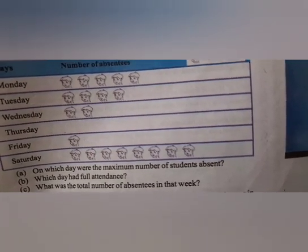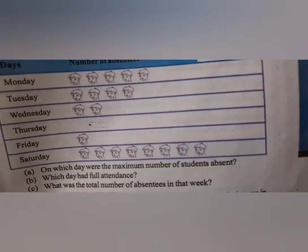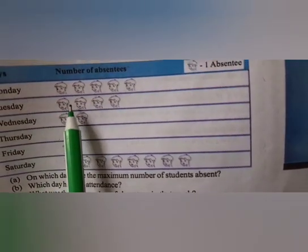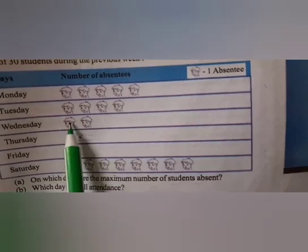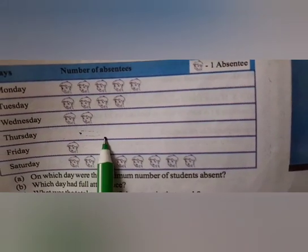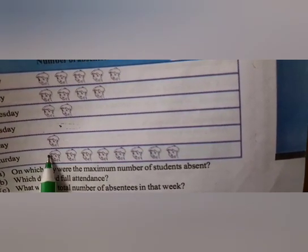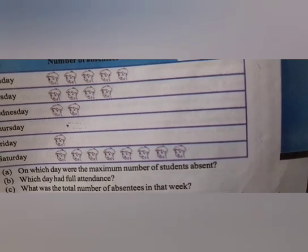Thursday had full attendance — no students were absent. Next, find the total number of absentees in that week. Counting: Monday 5, Tuesday 4, giving 9. Wednesday adds 2, giving 11. Thursday adds 0, Friday adds 1 giving 12, Saturday adds 8. The total number of absentees in that week is 20 students.